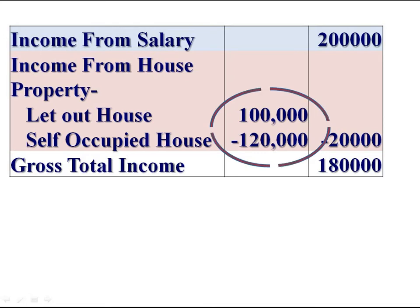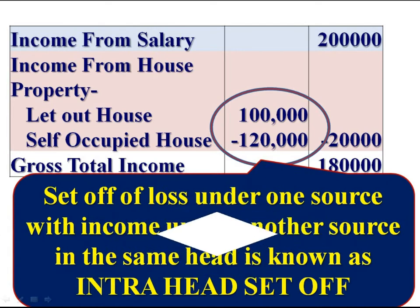Here, under income from house property there are two sources: first, the let-out house, and second, the self-occupied house. The loss under one source — the loss of the self-occupied house — is set-off with the income of the let-out house under the same head. This is the intra-head set-off, or set-off of loss within the head of income. It is the set-off of loss under one source with income under another source in the same head.